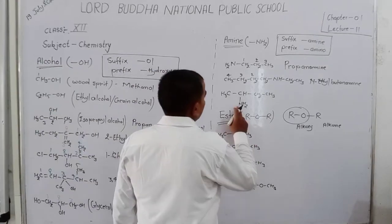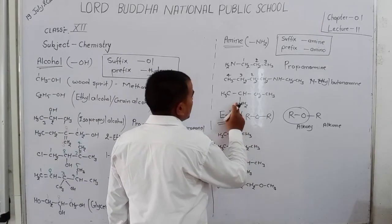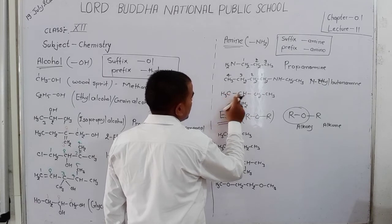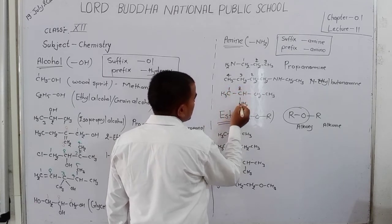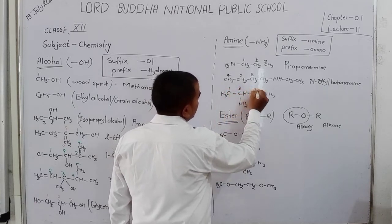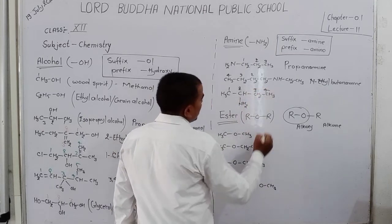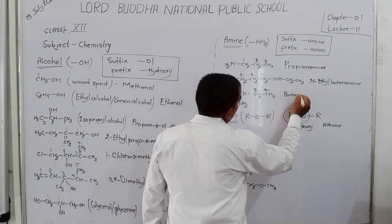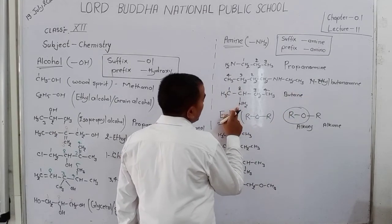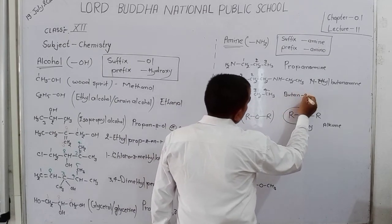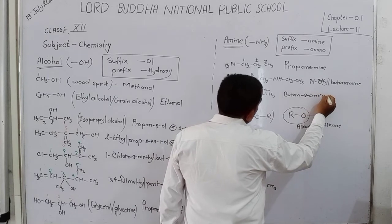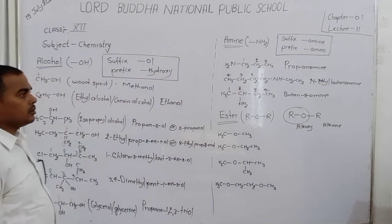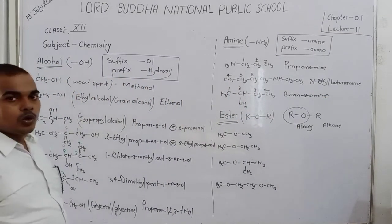In the next example, counting starts from one side giving the amine at the third position, and from the other side giving position 2. Counting starts to give the amine the lowest number — from here: 1, 2, 3, 4. Number of carbons: 4 — write 'butan'. The amine is at the second position — write '2-amine'. The name of the compound is Butan-2-amine.